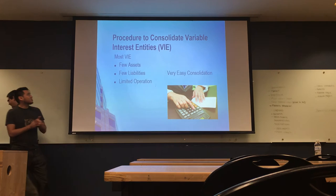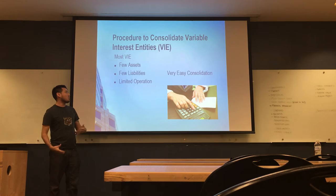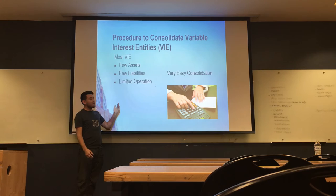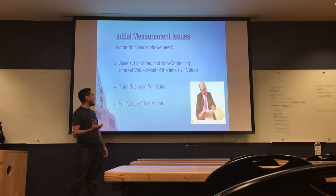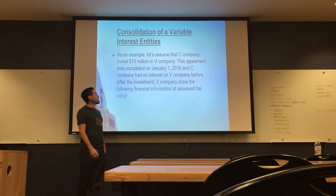The procedures to consolidate a VIE are straightforward — there are few assets, few liabilities, and limited operations. For initial measurement, in order to consolidate we need the assets, liabilities, and non-controlling interest, which are most often measured at fair value. We also need the total license fair value and the fair value of the net assets. As an example, Company C invests $10 million in Company B on January 1st, 2016. Company B has $10 million in cash, $40 million in land, $120 million in production facility, and $110 million in long-term debt, giving a fair value of net assets of $40 million.